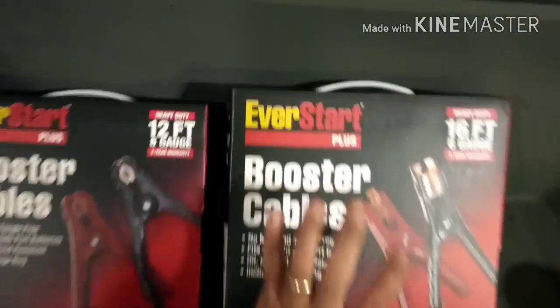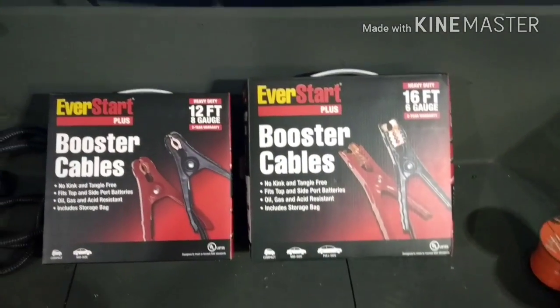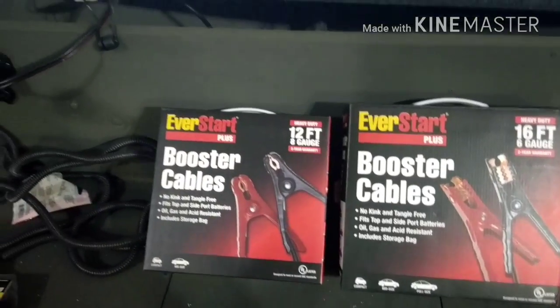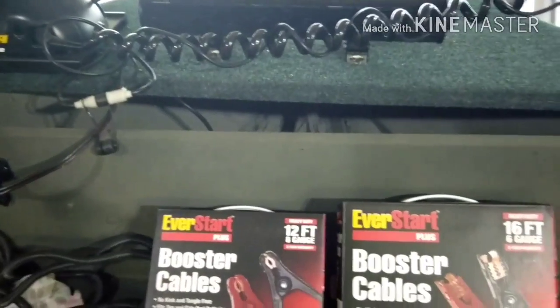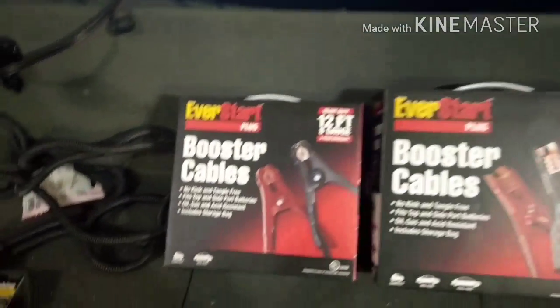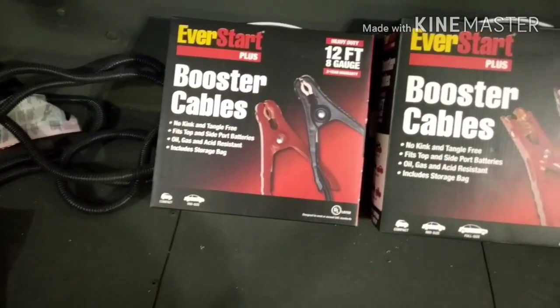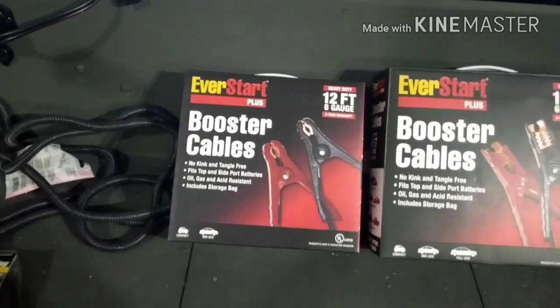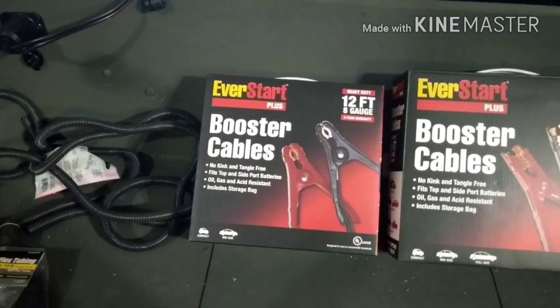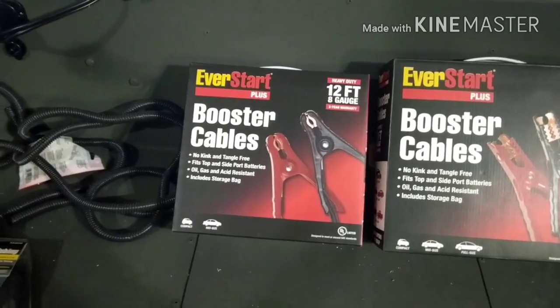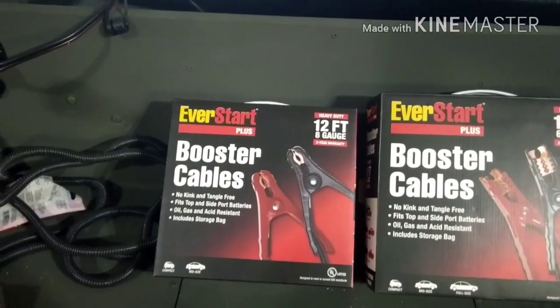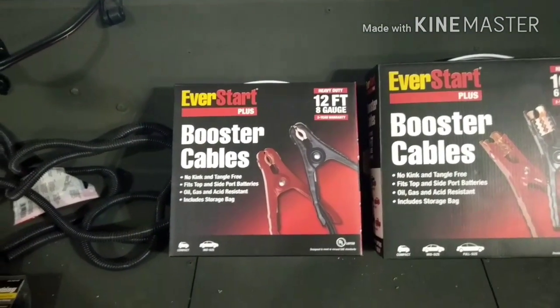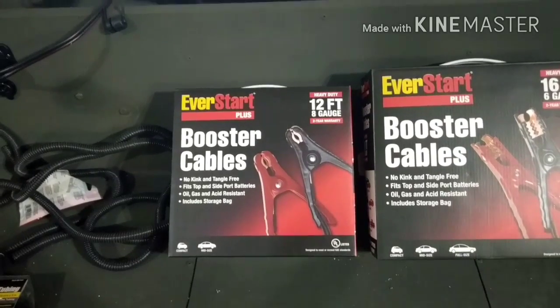So this one right here is going to go from the batteries all the way up front here to the trolling motor breaker, so it's going to power the trolling motor and the winch. This 12 foot 8 gauge is going to power everything else on the boat. That's going to run from the batteries up to underneath the dash to that fuse panel, and then wires will go off from the fuse panel to their respective accessories.